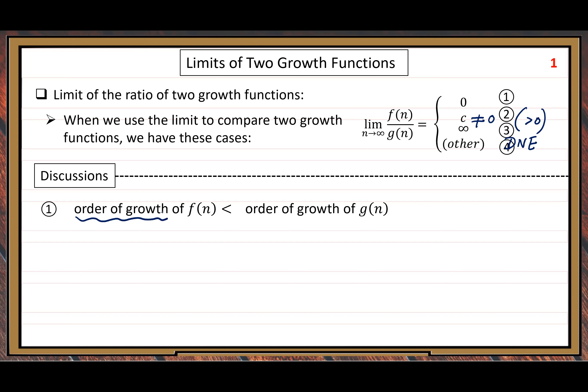Here we use a concept called 'order of growth.' For example, for n², the order of growth is two — that square number. But when we have n log n, it's hard to use one number to represent it. There's something a little vague when we talk about this concept.